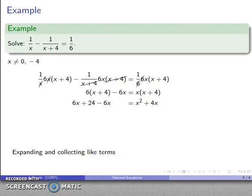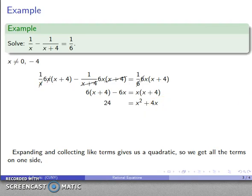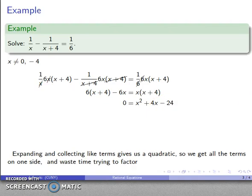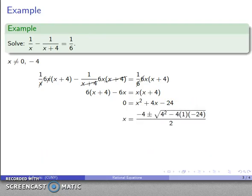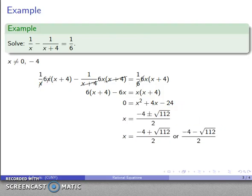And I can expand and multiply things out, and I have a quadratic equation. So I want to get all terms over onto the right-hand side, and I can waste time trying to factor. No, I don't want to do that. I want to use the quadratic formula here, and that'll give me my solutions. x equals, a is 1, b is 4, c is negative 24. I'll drop those into the quadratic formula, and I'll let the arithmetic dust clear, and I'll end up with my two solutions.